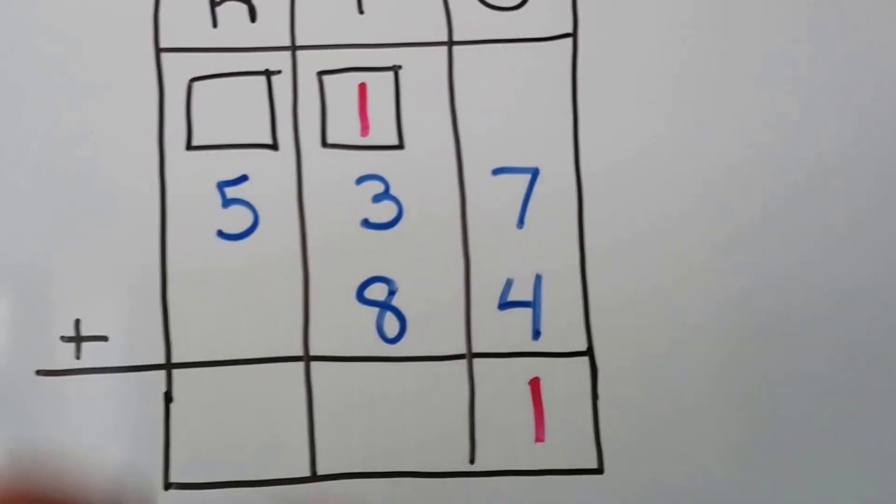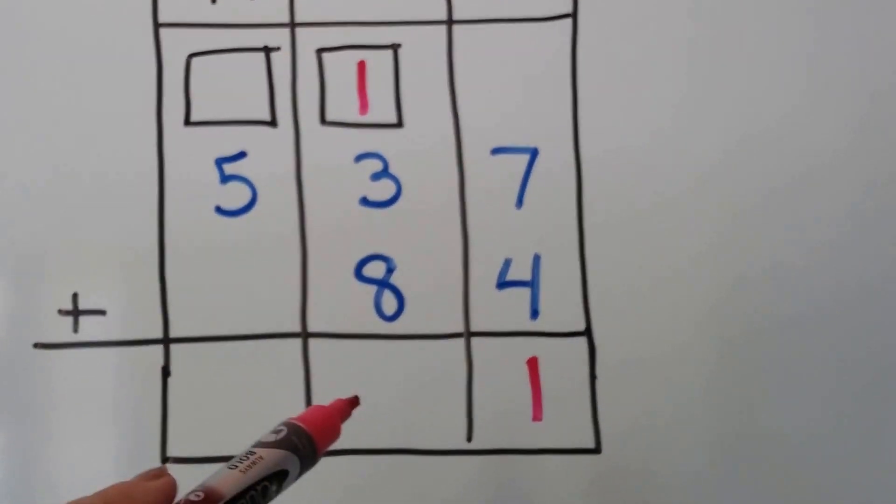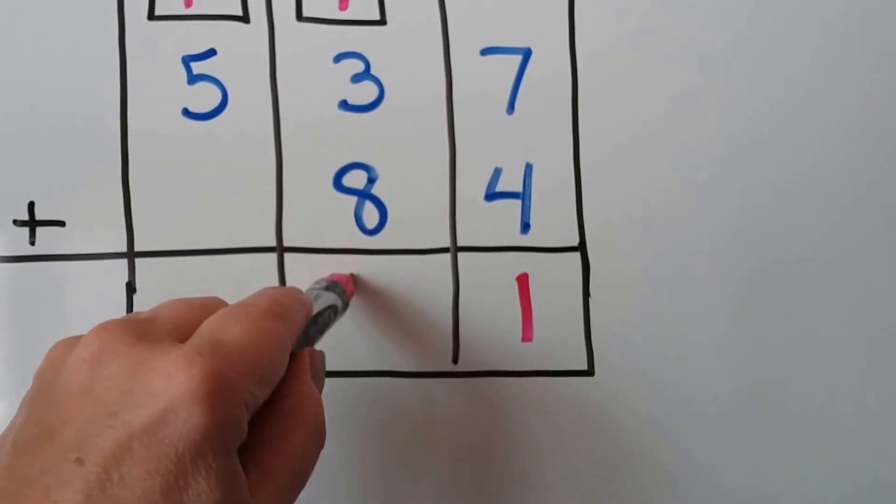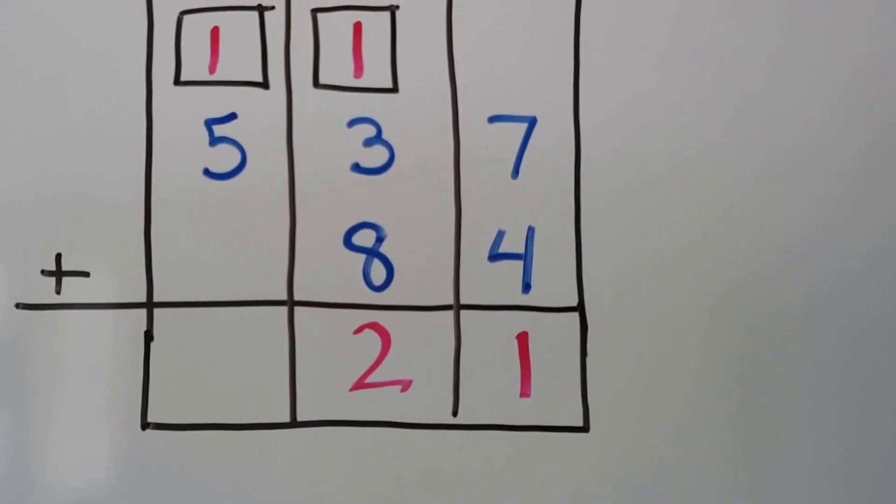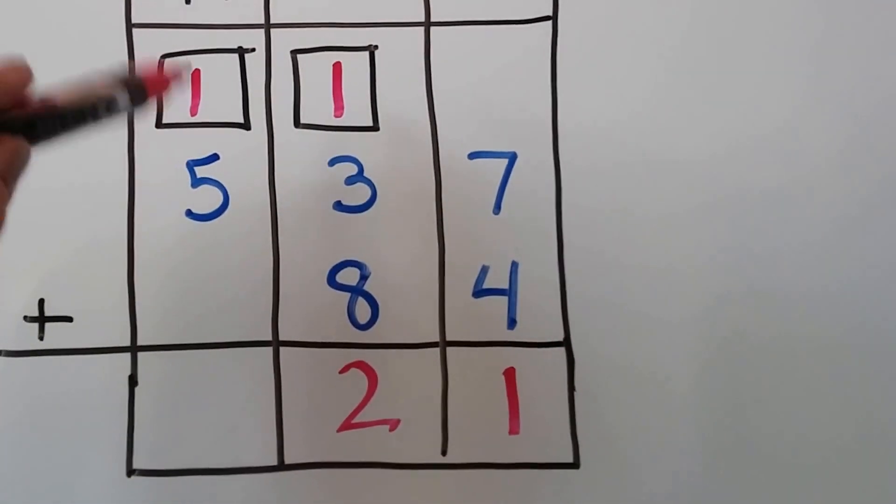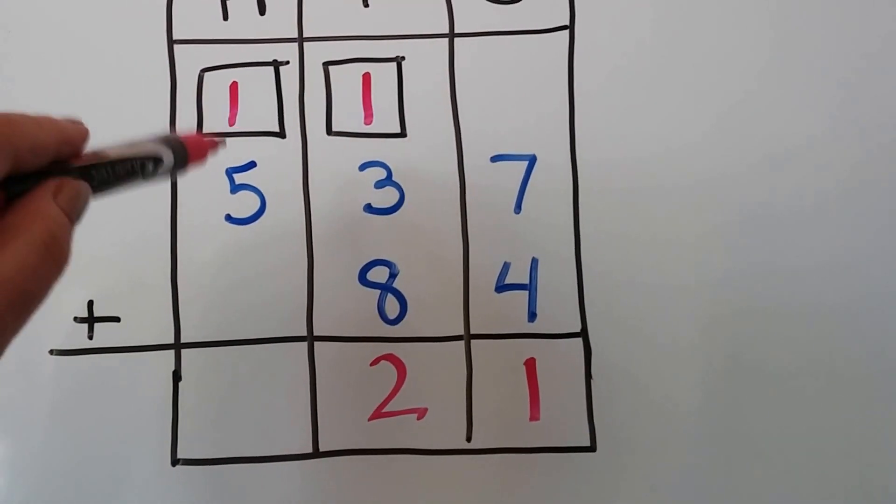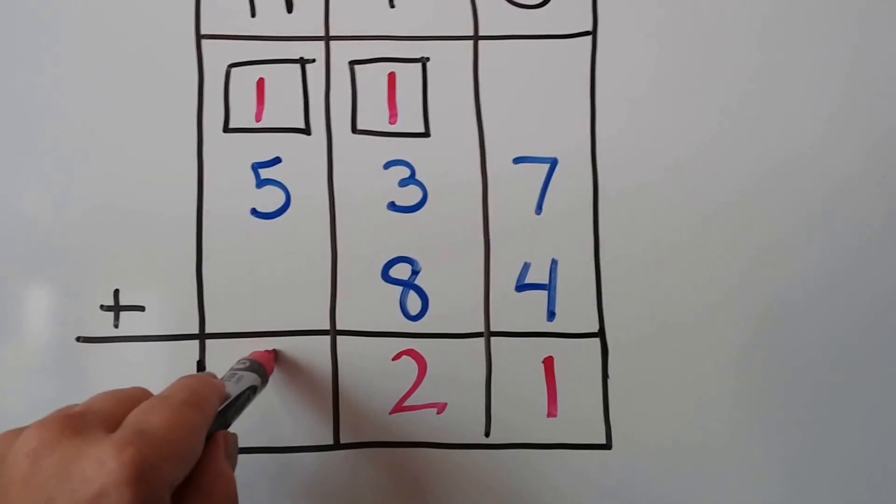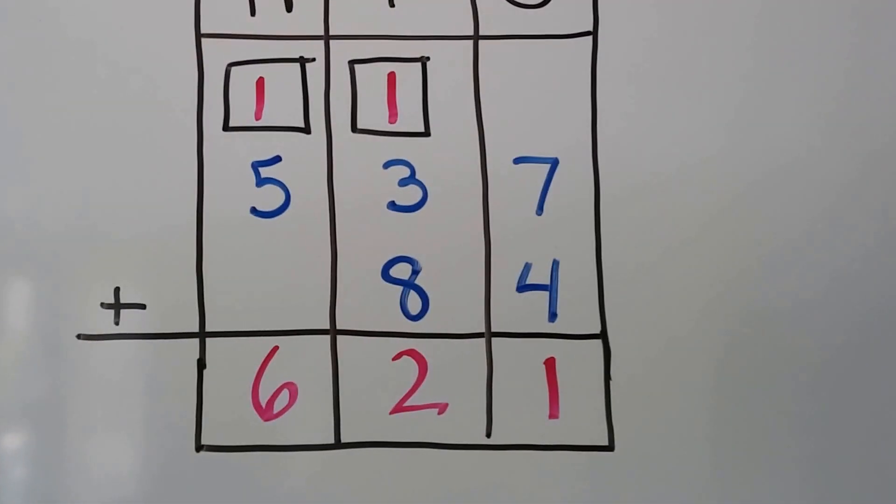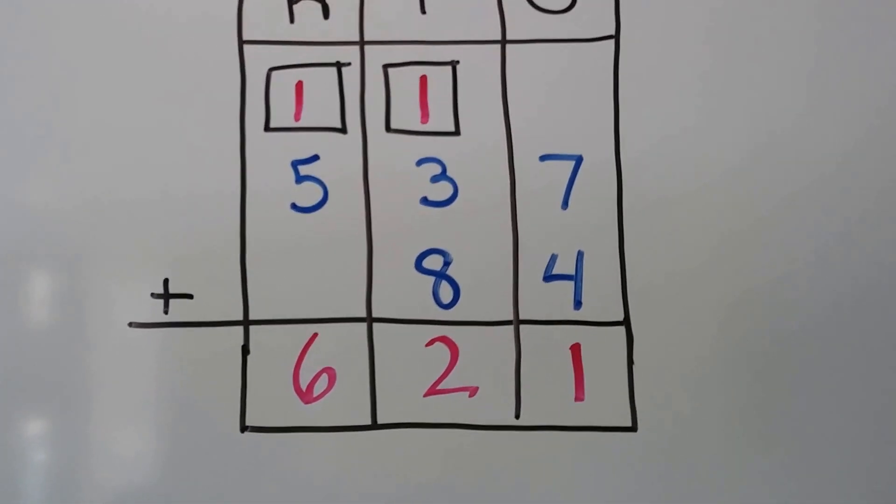Now we need to add these. Five and one is six. Six hundred twenty-one. Alright, let's try it again.